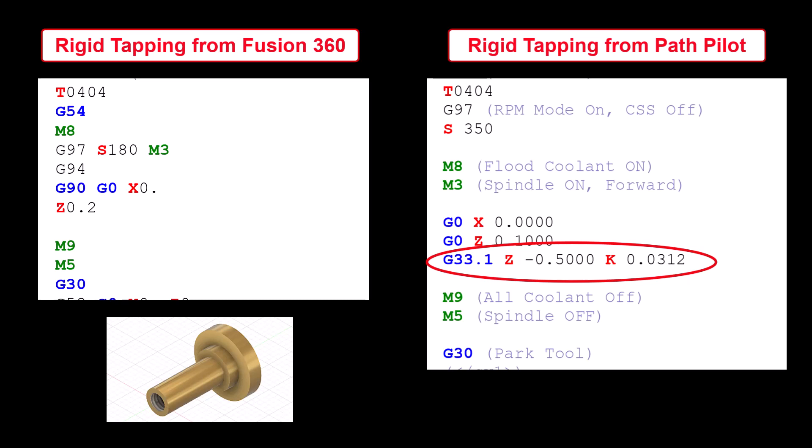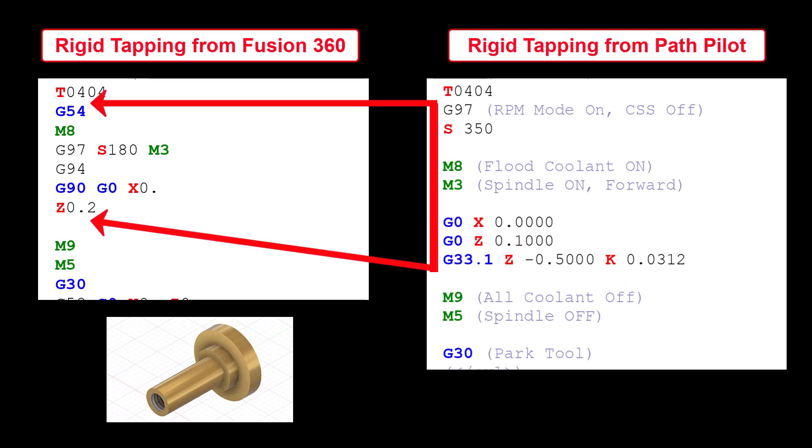The Z value of minus 0.5 is the depth of the tapping operation and the K value of 0.0312 is the pitch of the thread. I then copied this section of the G-code from the PathPilot software for the rigid tapping of the 10-32 threaded holes in the face of the stem.